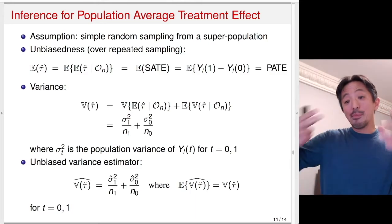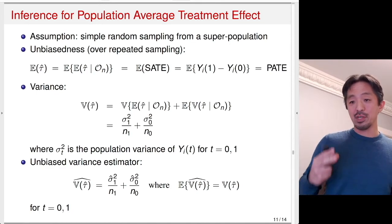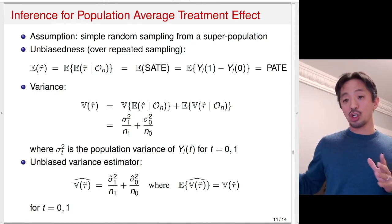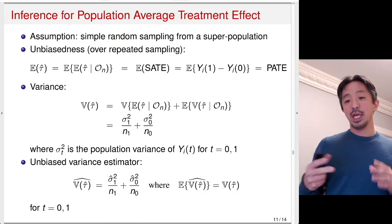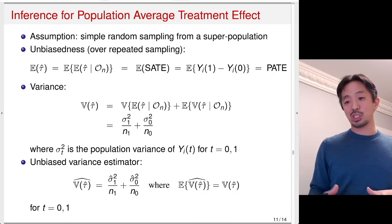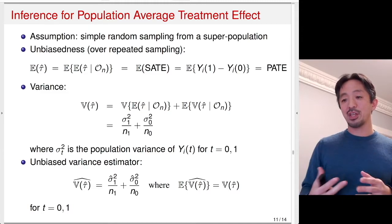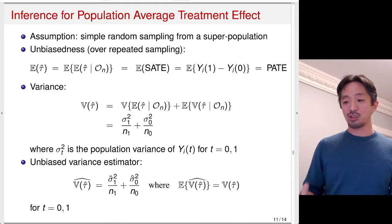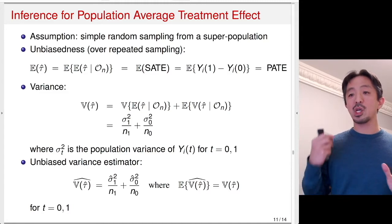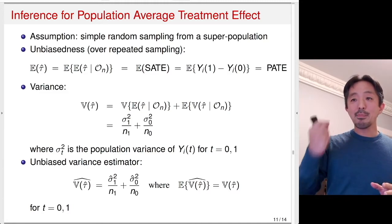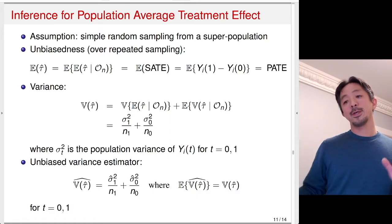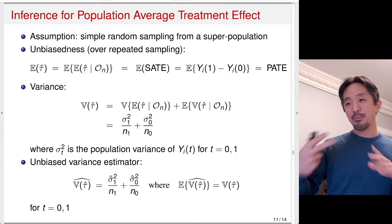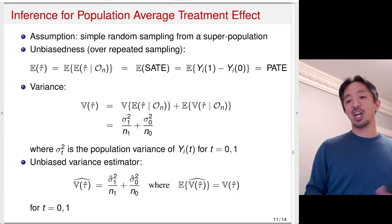For the sample average treatment effect, the variance estimator is conservative — the variance is a little larger than necessary. But for the population average treatment effect, it's exactly unbiased: the expected value of the estimated variance is equal to the actual variance. This makes sense because random sampling adds extra variability. So the variance for PATE is bigger than the variance for SATE.